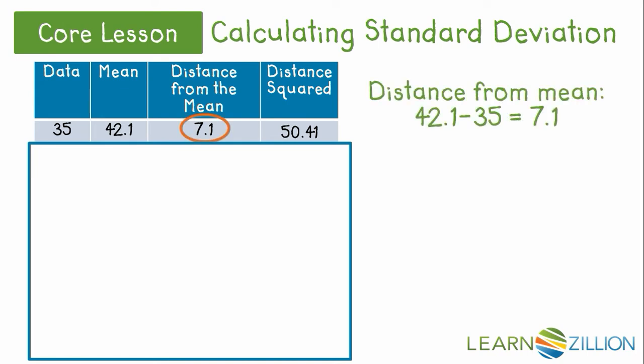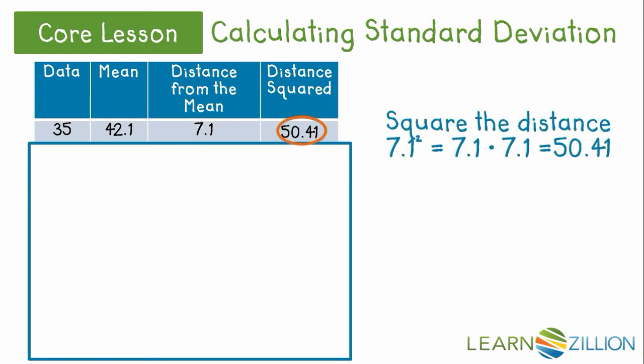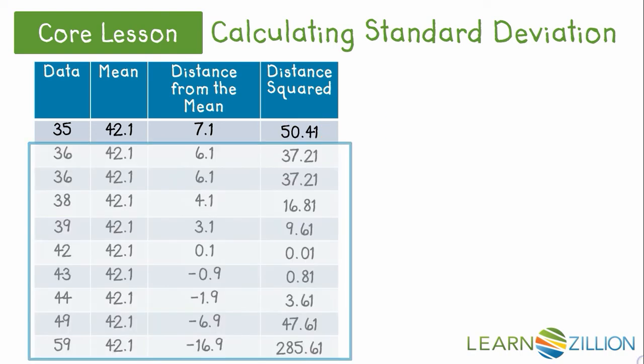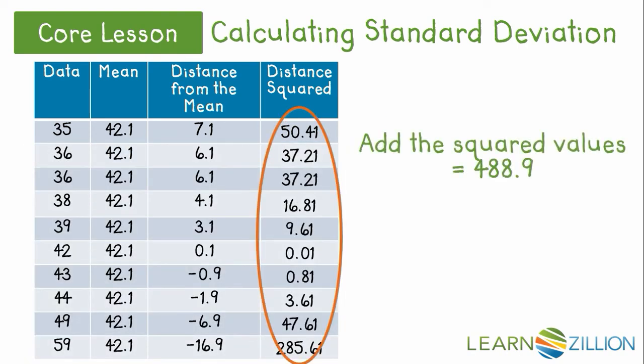So first find the distance from the mean, just like in mean absolute deviation. Then you'll square the distance from the mean by multiplying the distance by itself. Then you'll add all the square distances to get 488.9.